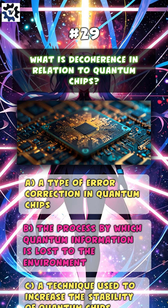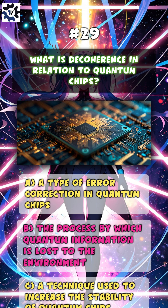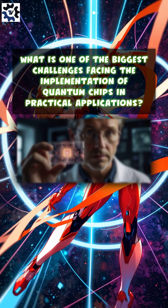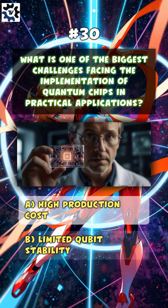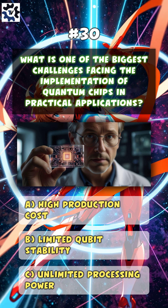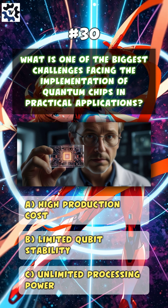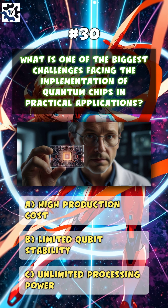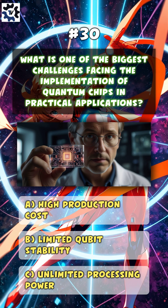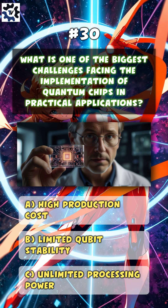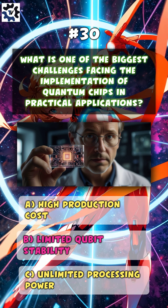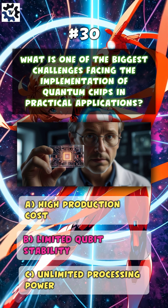What is decoherence in relation to quantum chips? The answer is B: the process by which quantum information is lost to the environment. What is one of the biggest challenges facing the implementation of quantum chips in practical applications? The answer is B: limited qubit stability.